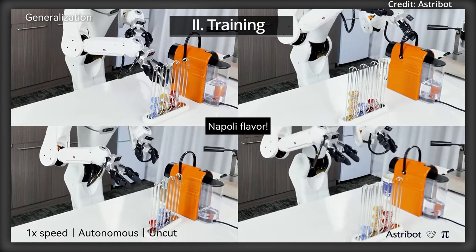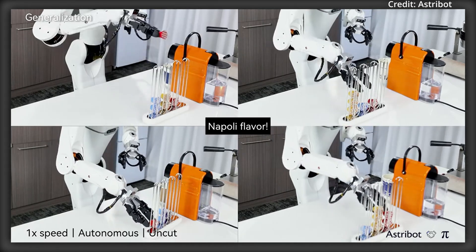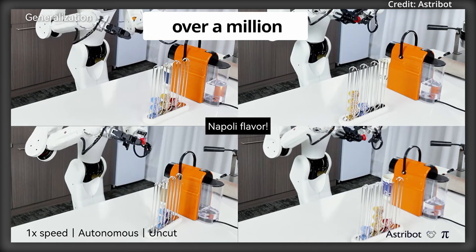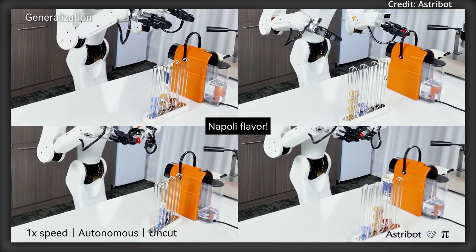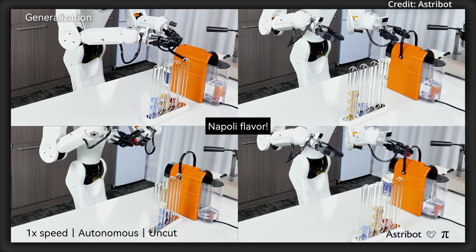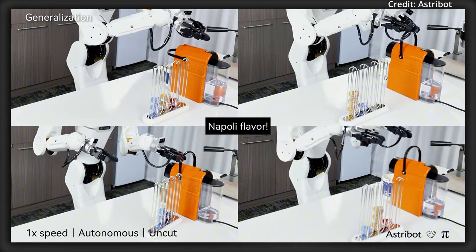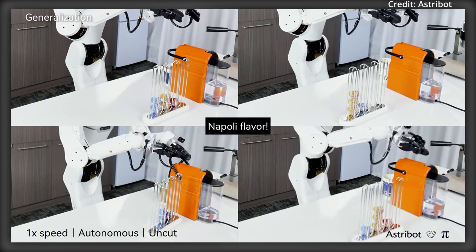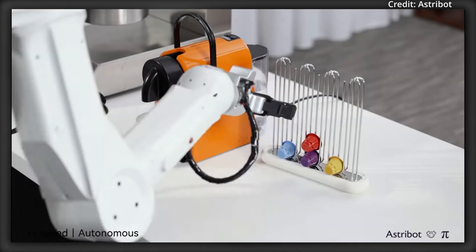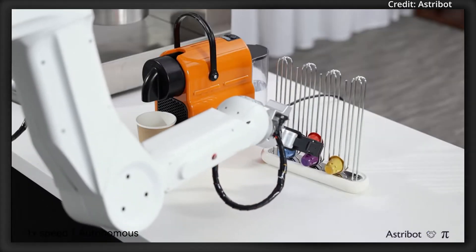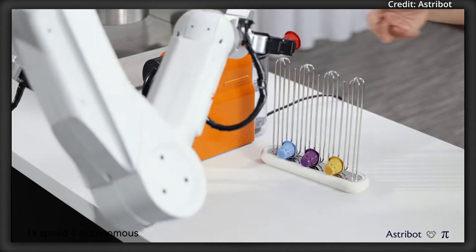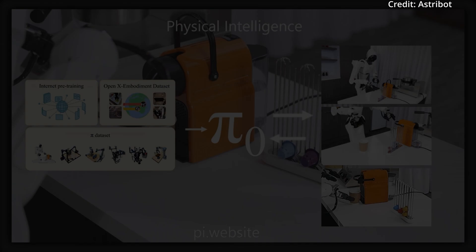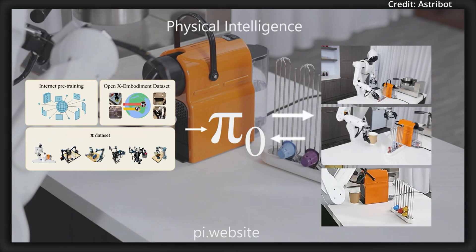And being trained using the OpenX Embodiment dataset, the largest open-source robot dataset featuring over a million real robot trajectories across 22 different robot types, the S1 is well-equipped to handle a growing variety of tasks, including everything from single-arm operations to complex bi-manual tasks and quadruped movements. By automating everyday chores such as cleaning, cooking, and general household management, the Astrobot S1 promises to transform the way consumers manage their homes.